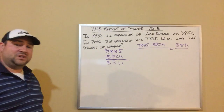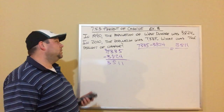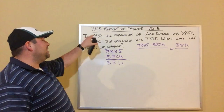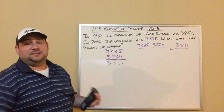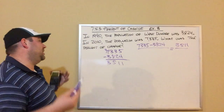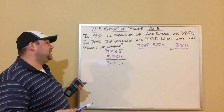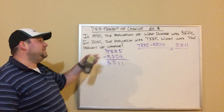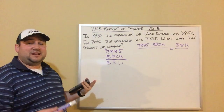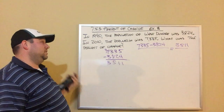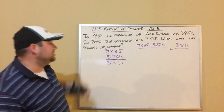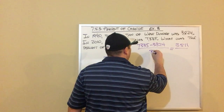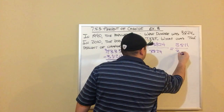All of that is divided by our original amount. Our original amount is what we started with. Whenever we're talking about things dated by years, whatever's older is the original. So the population in 1990 is the original, which was 3,824.